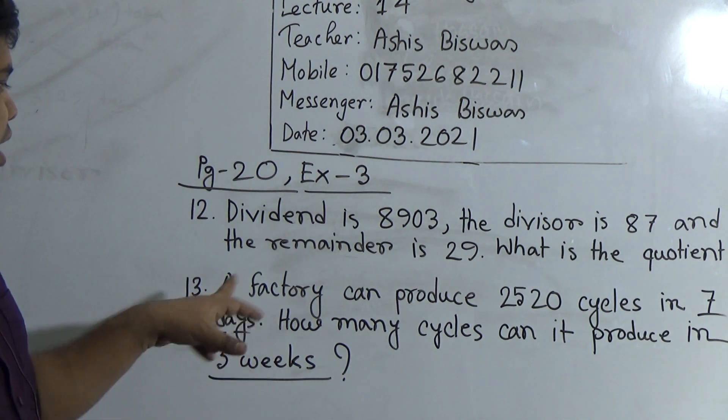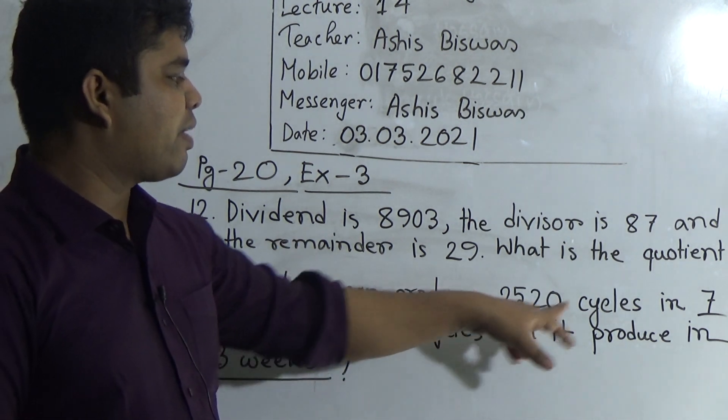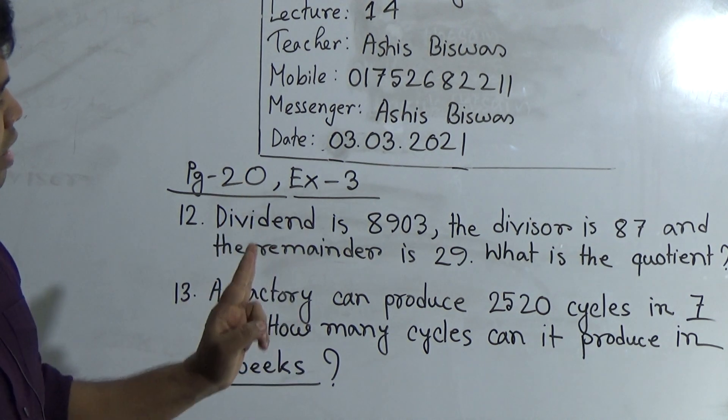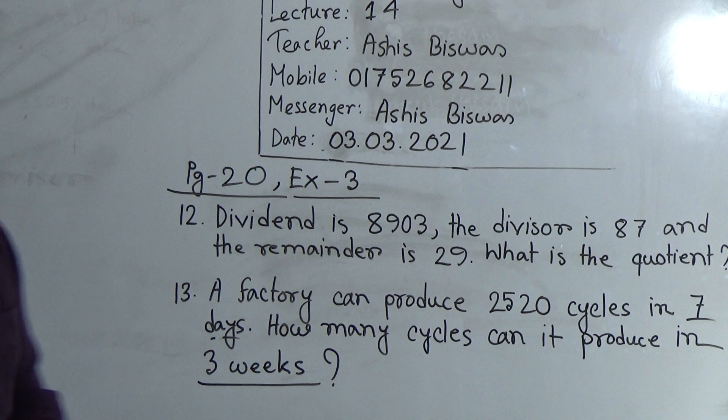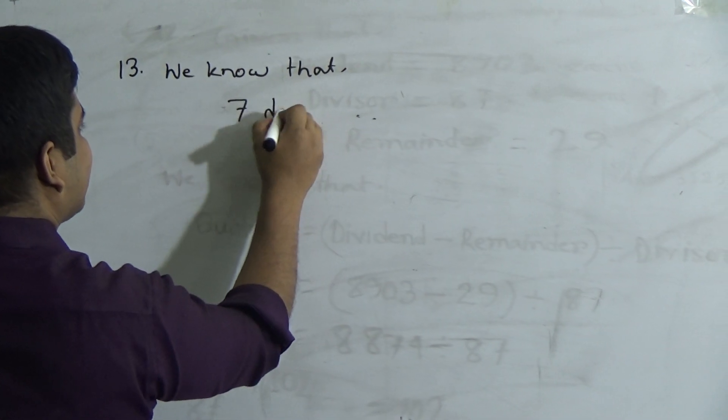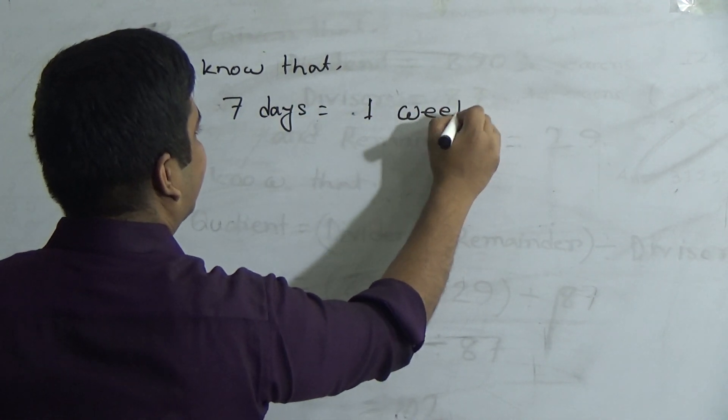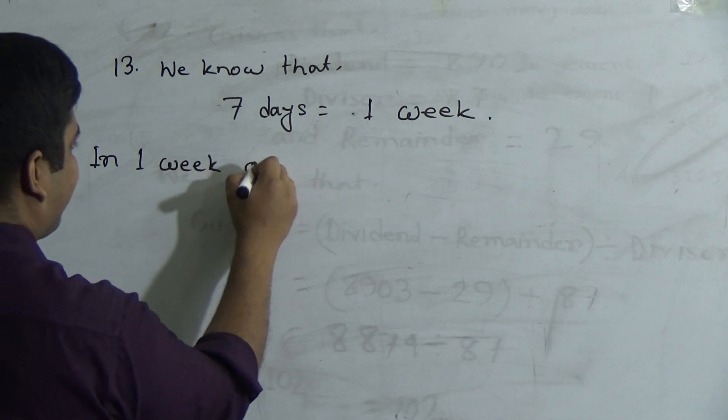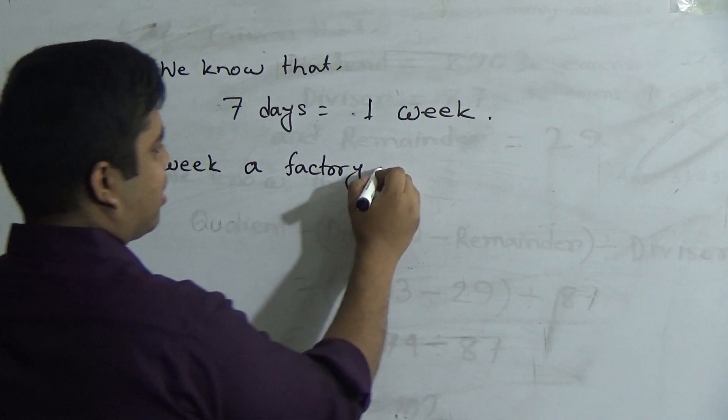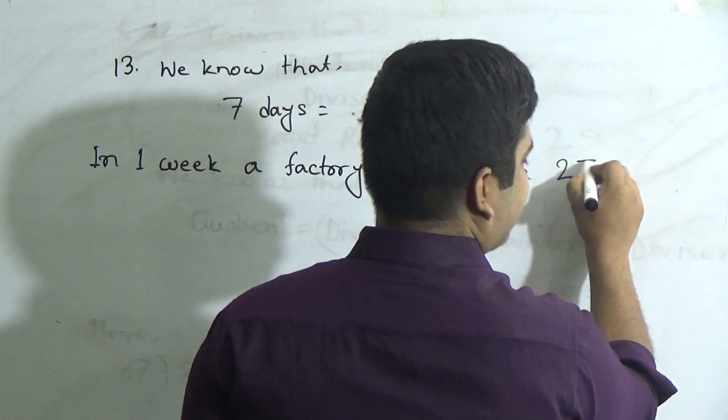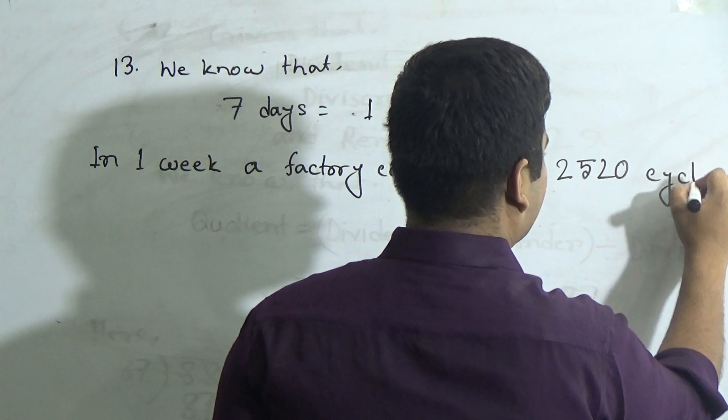That is why we can write: in 1 week, a factory can produce 2520 cycles. So in 3 weeks, a factory can produce, we multiply 2520 by 3 and we get the required amount of answer. So write question number 13. First of all write: we know that 7 days equal to 1 week. So now write: in 1 week, a factory can produce 2520 cycles.